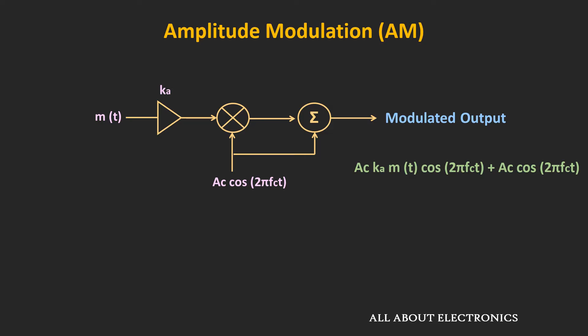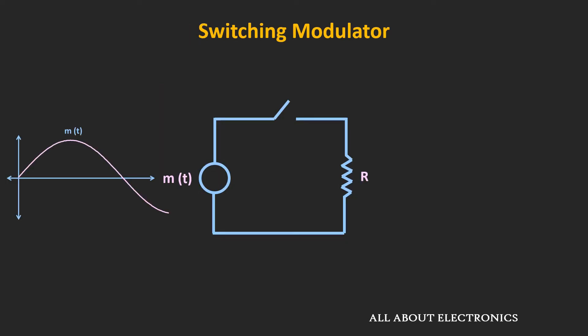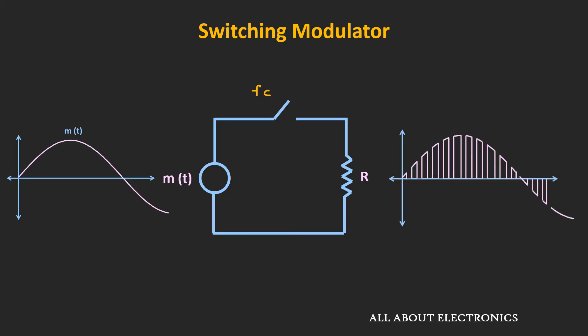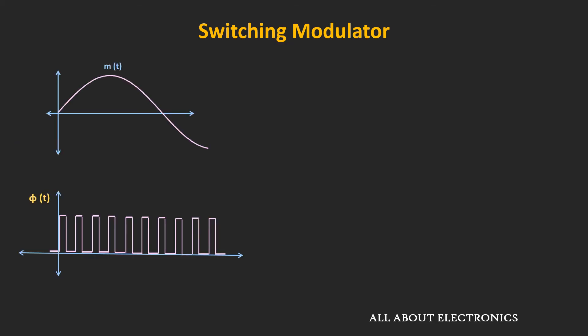There are several ways to do the multiplication of two signals. In this video, we will see that using the switching operation also, it is possible to multiply the two signals. Let's say through the switch, the message signal m(t) is connected to some resistor. When the switch is closed, then the message signal will appear across the resistor. And when the switch is open, the voltage across the resistor will be zero. So if we periodically turn on and off this switch at some frequency fc, then the output across the resistor would look like this — whenever the switch is closed, we will get the message signal. The same thing is equivalent to multiplying the message signal with the periodic pulse train of frequency fc, and if we multiply these two signals, we will get the same result.